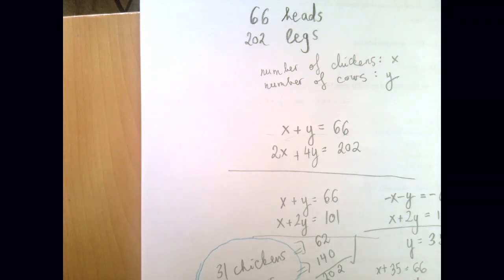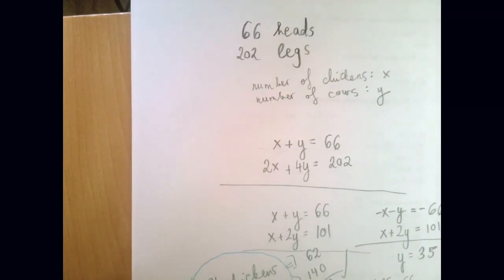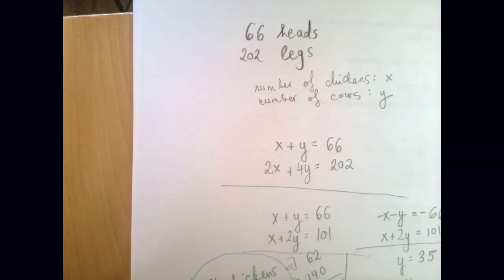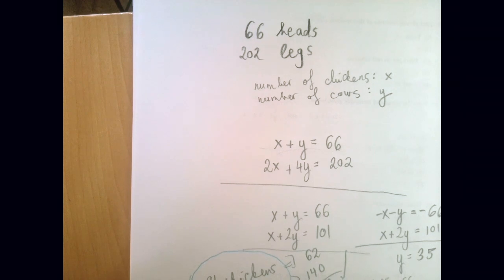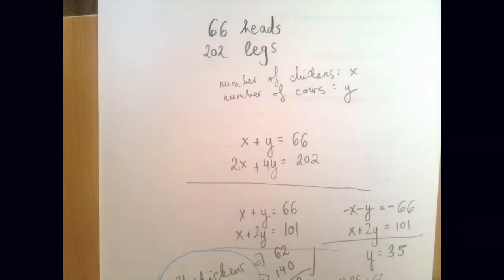I just want to state for the record that whatever can be handled with a system can also be handled with an equation. There's a huge overlap. It's not that hard to say we have x many chickens and 66 minus x many cows and use just one equation. Thank you for watching.